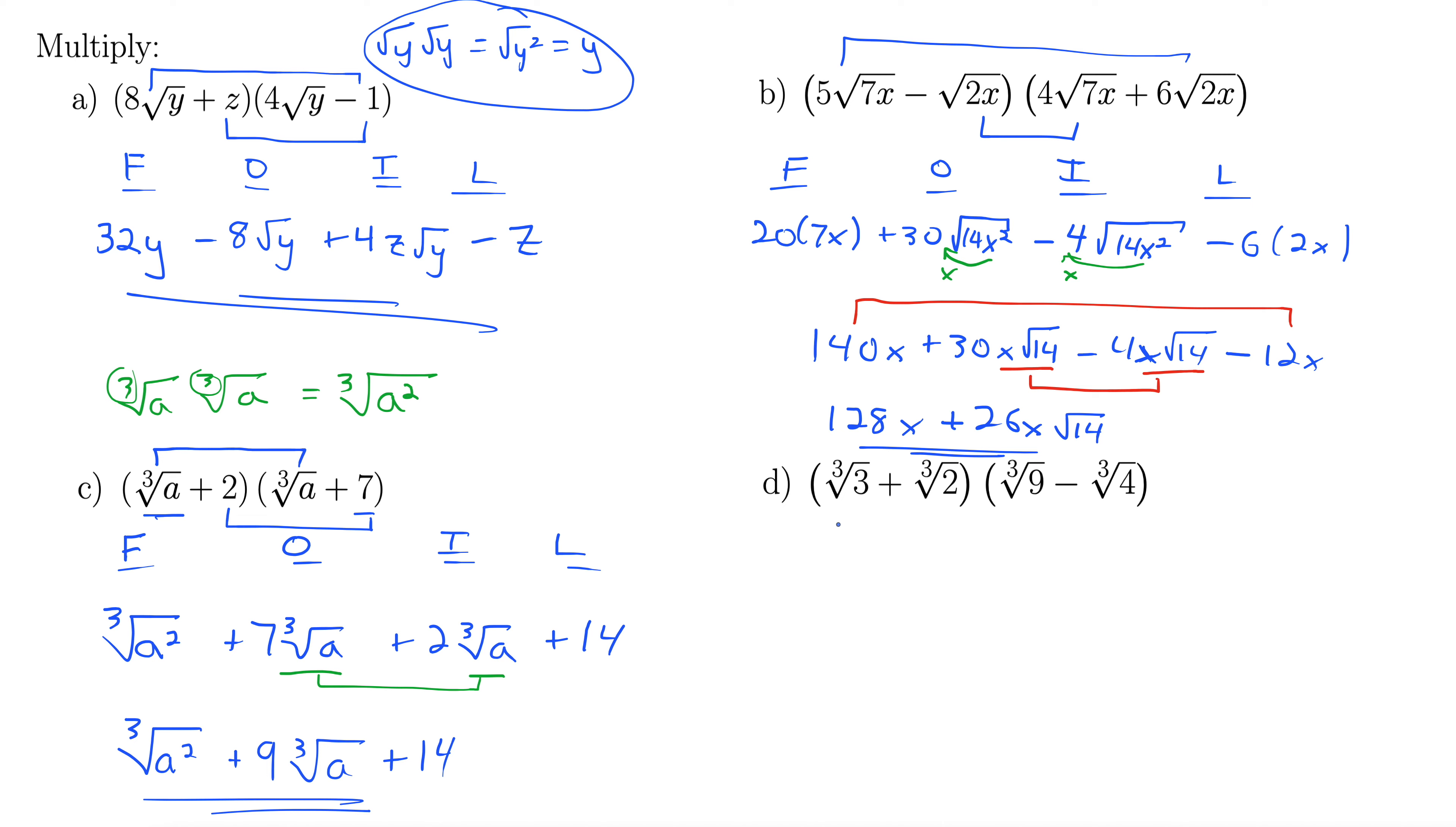Let's look at d. For d we have cubed root of 3 plus cubed root of 2, all of that quantity times the quantity of cubed root of 9 minus cubed root of 4. You guessed it, foil. The tried and true foil comes through again. Here we go, first. Cubed root of 3 times 9 gives us cubed root of 27. For outside, we have cubed root of 3 times negative cubed root of 4. That gives us minus cubed root of 12. Inside, cubed root of 2 times cubed root of 9. That gives us plus cubed root of 18. And finally, last, cubed root of 2 times minus cubed root of 4 gives us minus cubed root of 8.